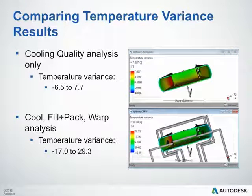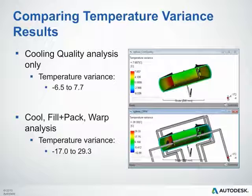Comparing temperature variance results: the cooling quality analysis showed a temperature variance from −6.5 to 7.7 degrees Celsius. Whereas running a full cool, fill, pack, and warp analysis — which considers the actual cooling lines — produced a much more significant variance of −17 to 29.3 degrees Celsius on the scale.